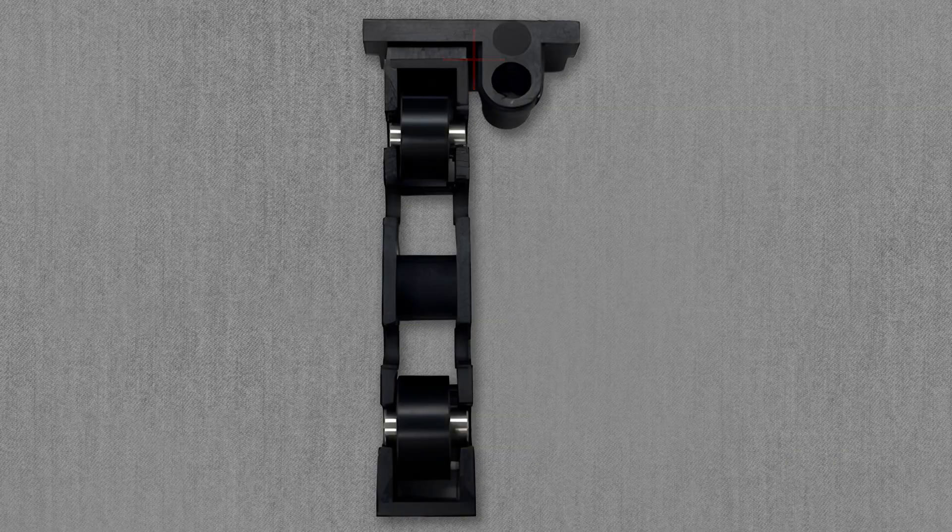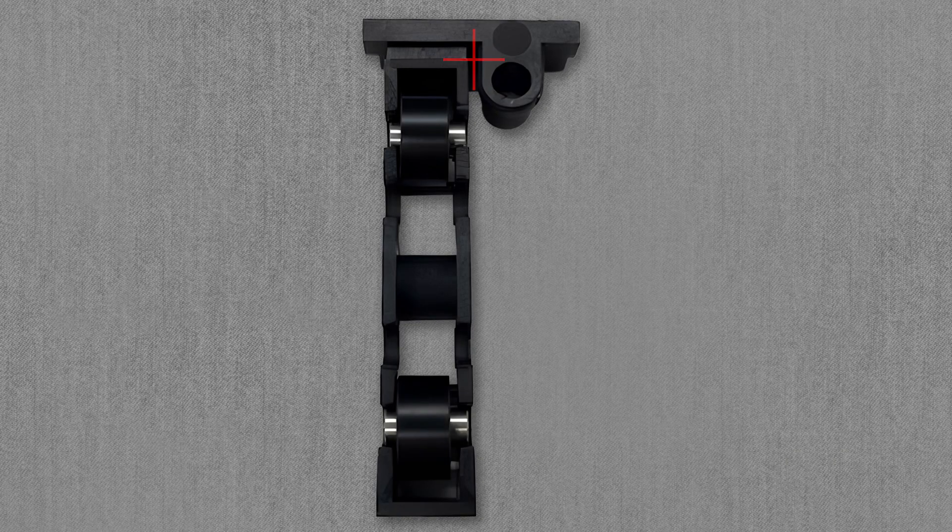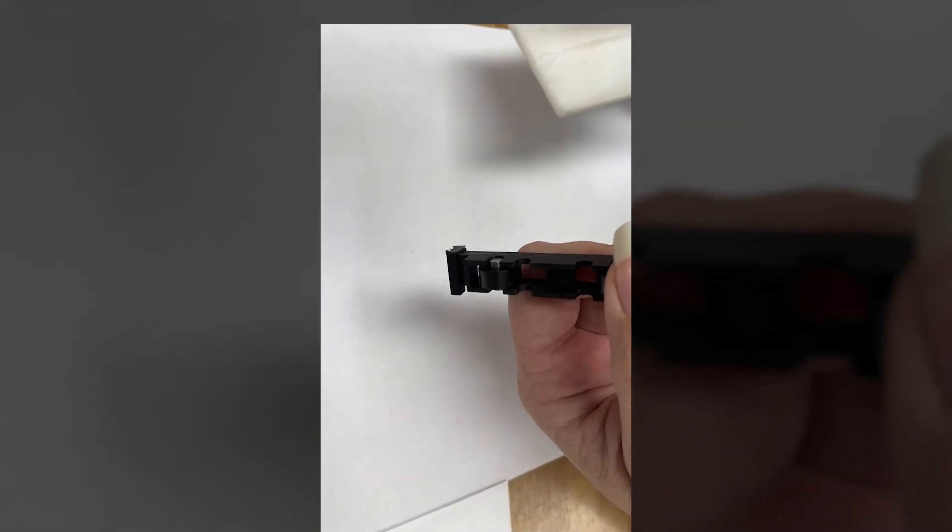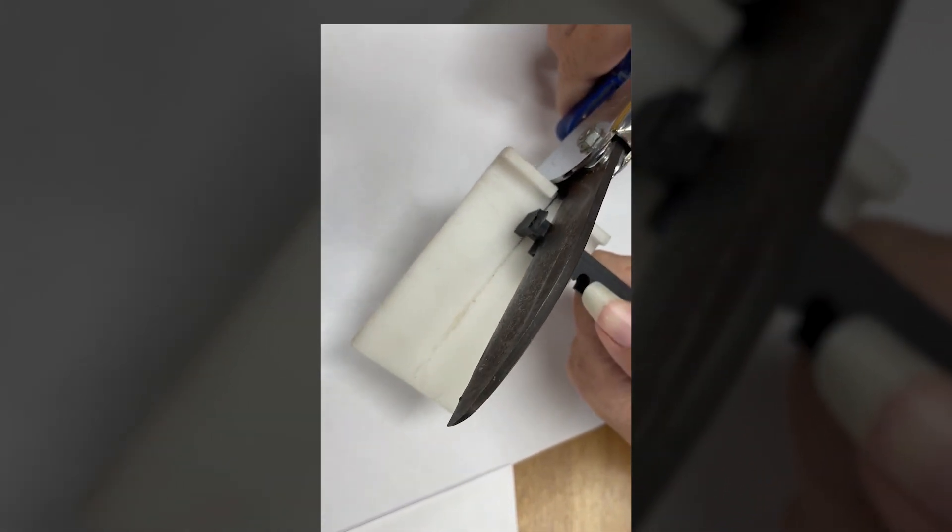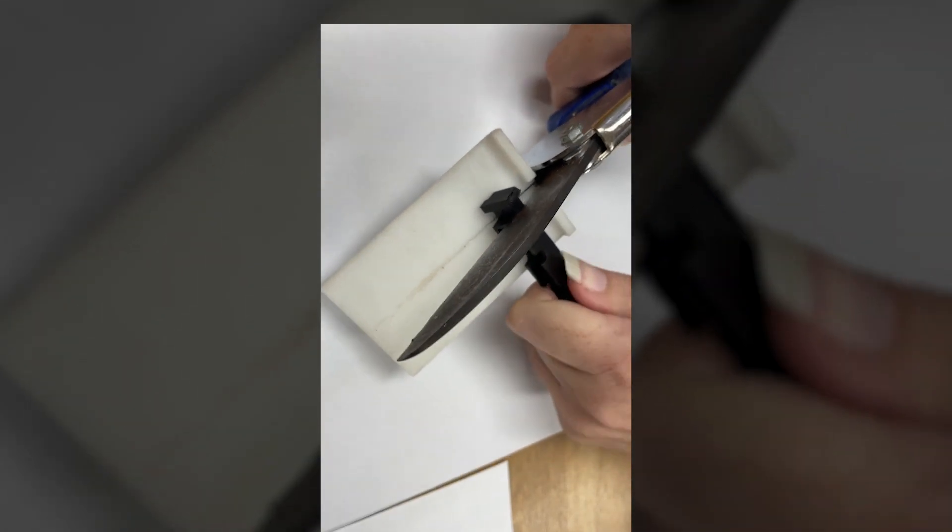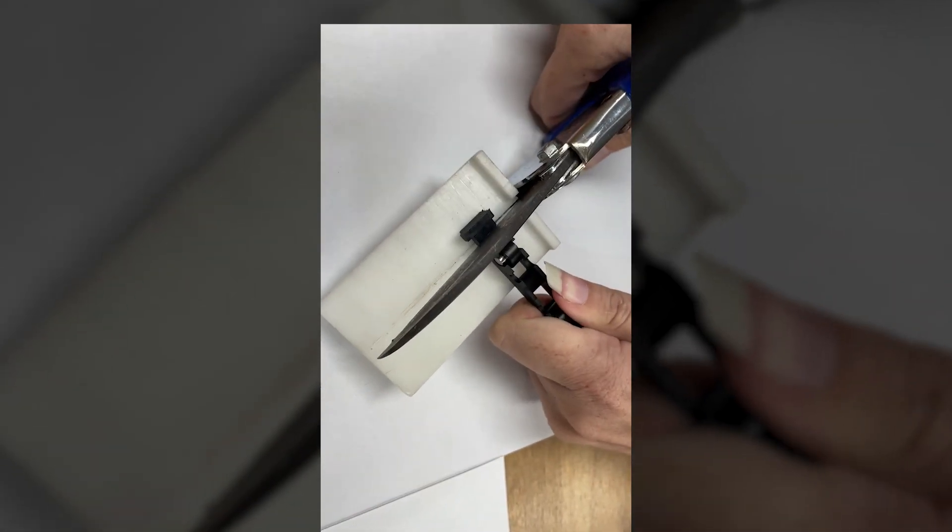Here you can see the two cuts you're going to make. Take up your cutters, position the roller in your hand, and complete the first cut. Take care as you cut. Now rotate the roller carriage to the other side and complete the second cut.